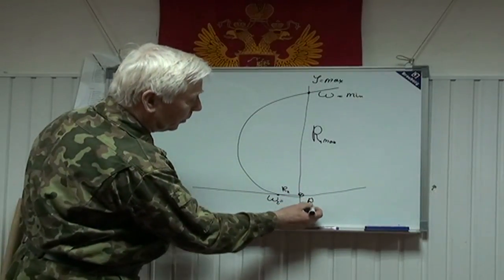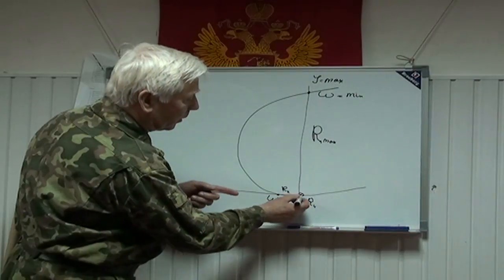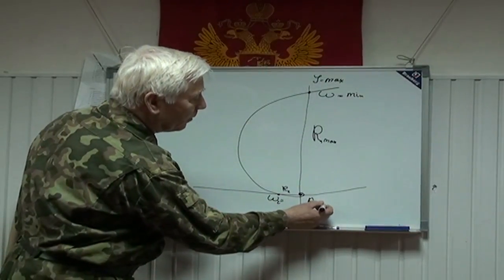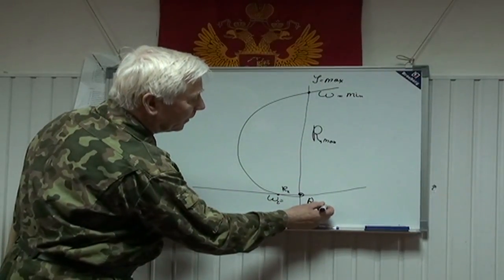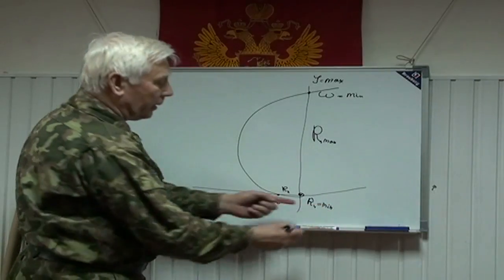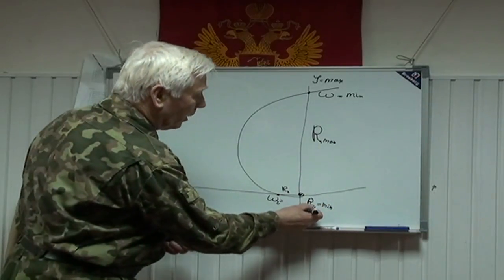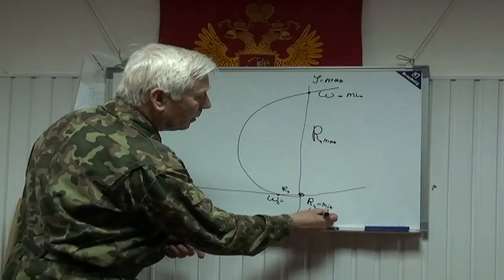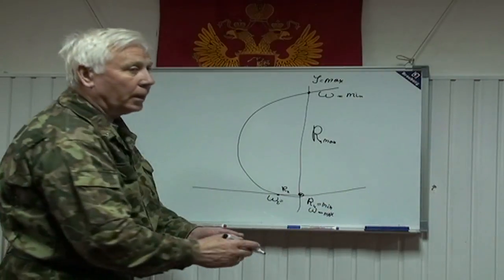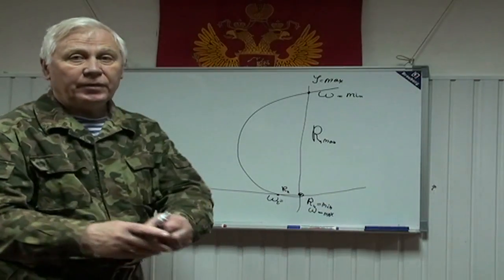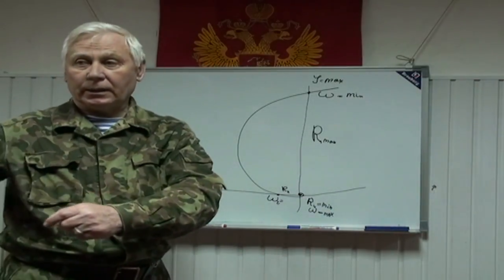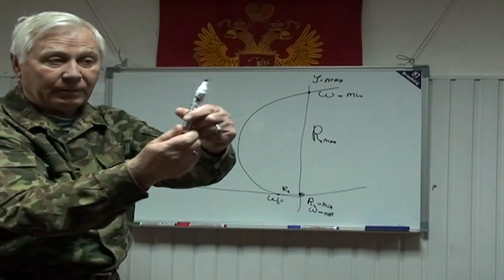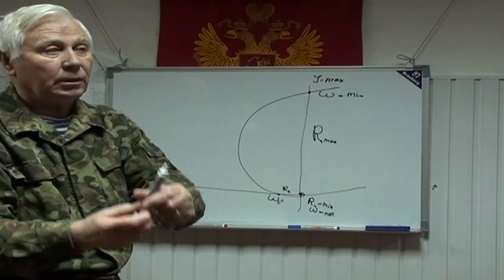In this point the radius — that would be the fourth — will be minimal. The radius is minimal and the angular velocity is maximum. You saw that in the midpoint of turning this rod, the velocity is maximum.